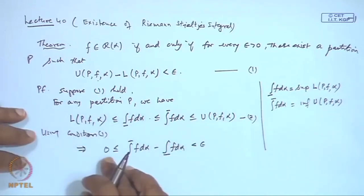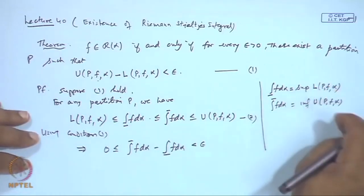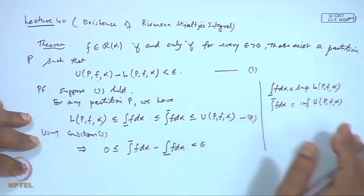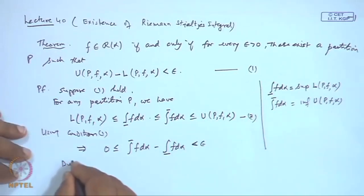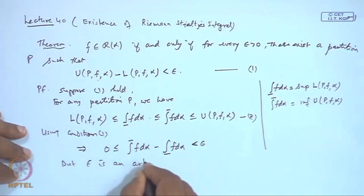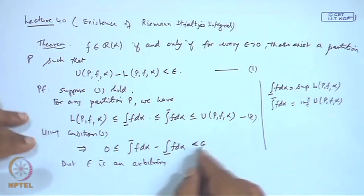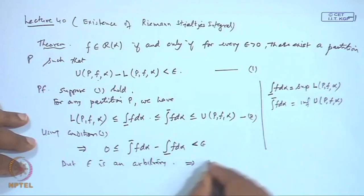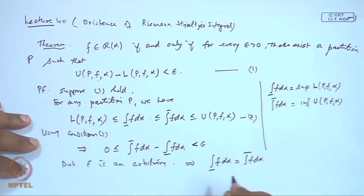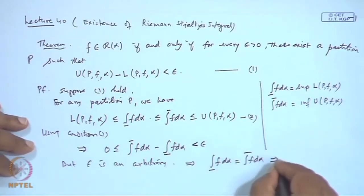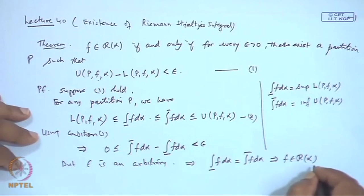This quantity is non-negative because the upper and lower sums are defined in terms of M_i, m_i, Δα_i where α is a monotonic function. Since this difference is less than ε and ε is an arbitrary number — however small — this shows that the lower integral and upper integral coincide.